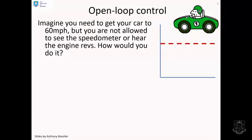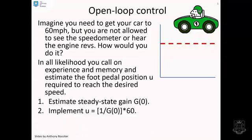So here's an example. Open loop control. Now, imagine you need to get your car to 60 miles an hour. But, and here's a big but, you are not allowed to look at the speedometer or to hear the engine revs. How would you do it? In all likelihood, you would call on experience and memory, and you would have to estimate the foot pedal or the throttle position U required to reach the desired speed. You might estimate the steady state gain of the car, G(0). And then you would say, the input I need is going to be 1/G(0) times 60.